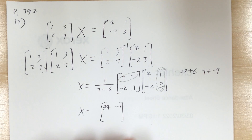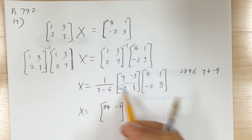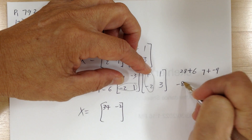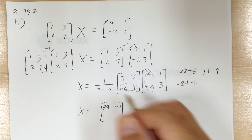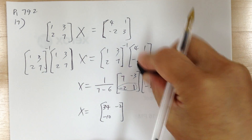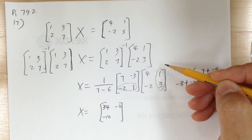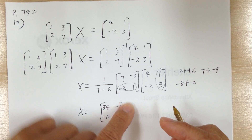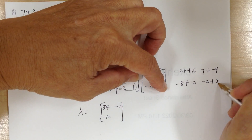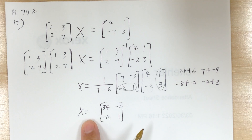Now let's go to the second row. Use the second row, first column. When you multiply, this gives you negative 8 plus negative 2, which is negative 10. Then go to the second column — this would be negative 2 plus 3, which becomes 1. And that's it. So X equals that matrix.